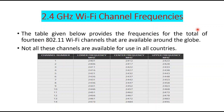Channel number 1 starts from 2412 MHz. If we add 5 MHz, channel 2 is at 2417 MHz, channel 3 at 2422 MHz, channel 4 at 2427 MHz, and so on. The lower and upper frequencies for each channel differ by 20 MHz — that is the channel bandwidth.